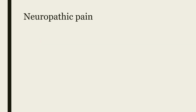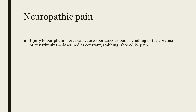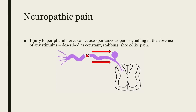Briefly, I will cover neuropathic pain. Neuropathic pain is caused by injury to peripheral nerves, which can cause spontaneous pain signaling in the absence of any noxious stimulus. It is described as a constant, stabbing, shock-like pain. As seen here, a break in this neuron has caused an action potential to occur and be sent to the central nervous system.